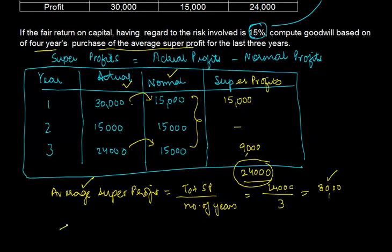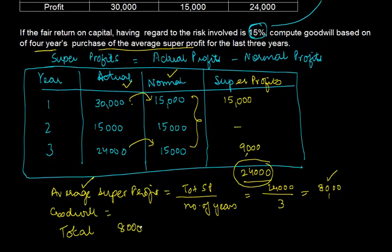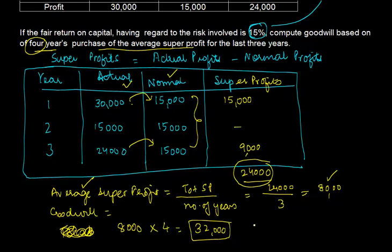Goodwill can now be simply calculated as average super profit of 8,000 multiplied by 4 years purchase, which equals 32,000. So the valuation of goodwill using the super profit method is 32,000.